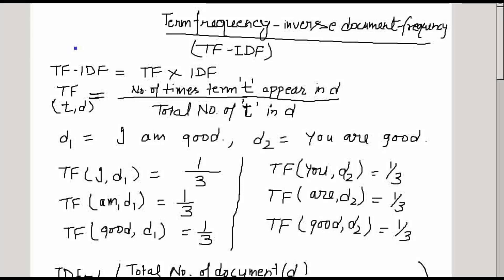In this video I will tell you about the mathematics behind term frequency and inverse document frequency. In short, TF-IDF tells about the importance of a word in a document, and it is calculated as TF-IDF equals TF multiplied by IDF.